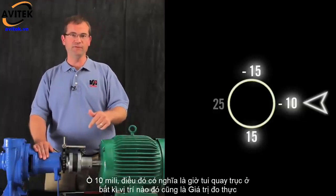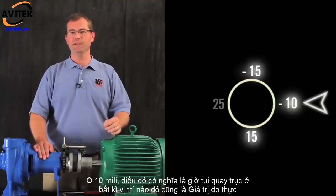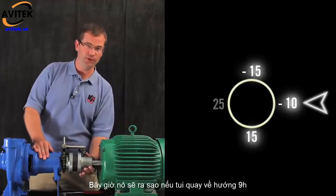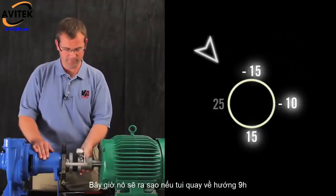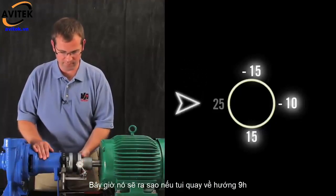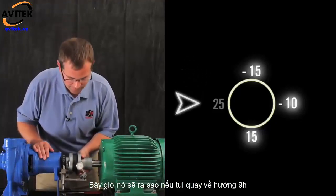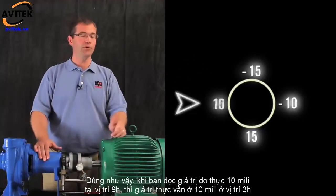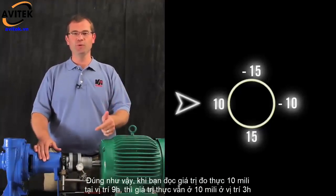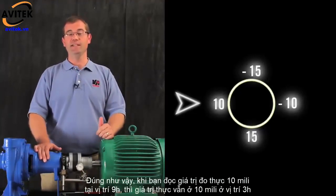Wherever we have the shafts rotated now, we're always reading True Position. So what happens if I roll it to 9 o'clock? You're right. Since we're reading True Position, it still reads 10 mils.